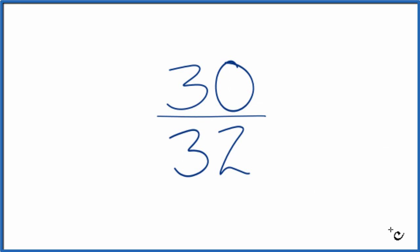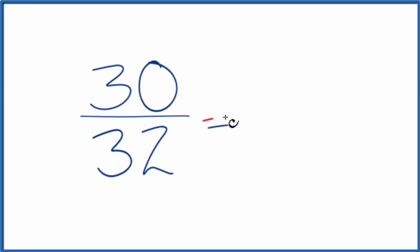Put it in simplest terms, so we need to find a common factor. And for 30 and 32, it looks like, why don't we just divide 30 by 2 and 32 by 2? 30 divided by 2 is 15.